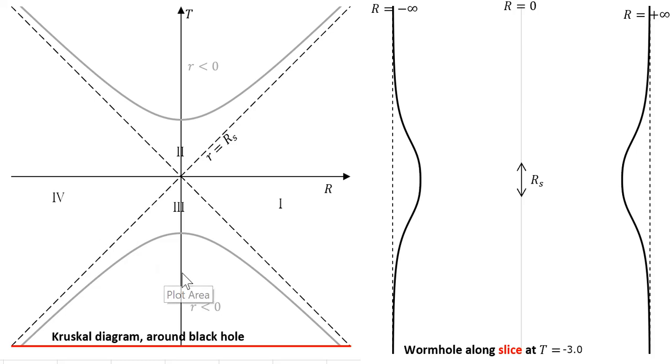Which is more than what your normal spacetime diagrams using Schwarzschild coordinates can do. These are Kruskal coordinates.